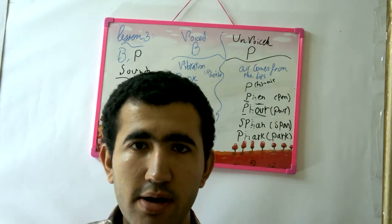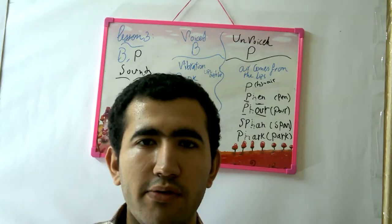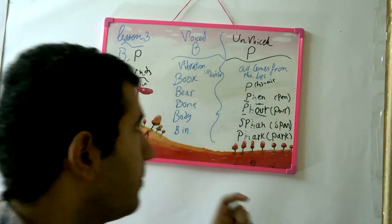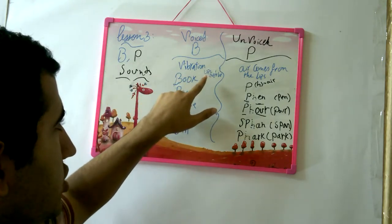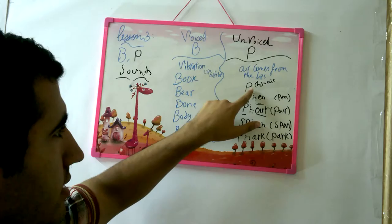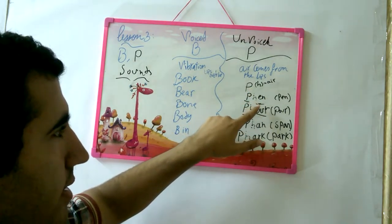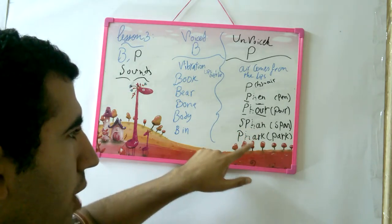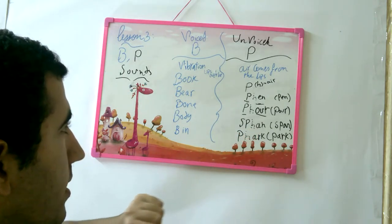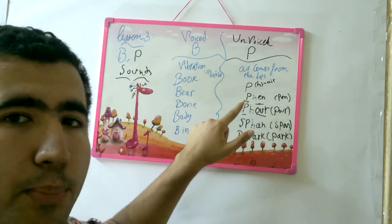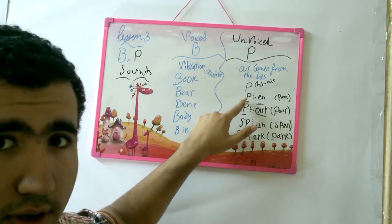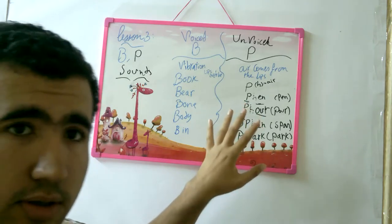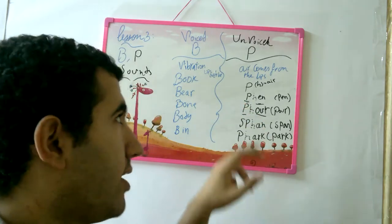Imagine there is an 'itch' — okay, like this one: pen, poor, span, park. Again: pen, pen. There's an 'itch' here. You imagine there's an 'itch', okay? But there is no 'etch' in the word — there is an 'itch' in the sound. Pen, pen.